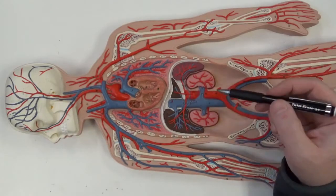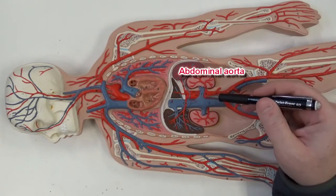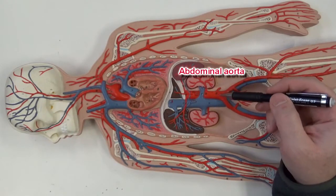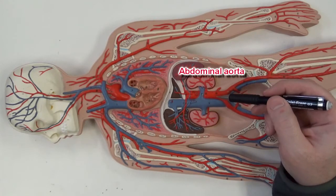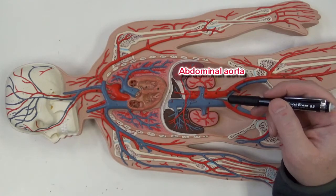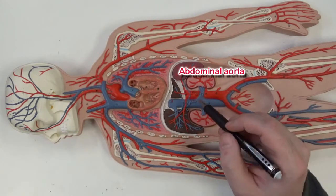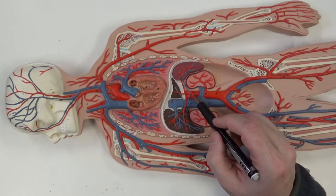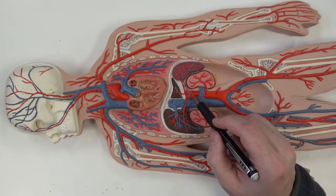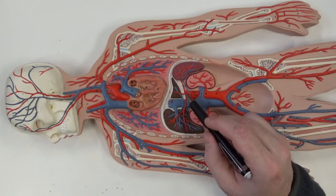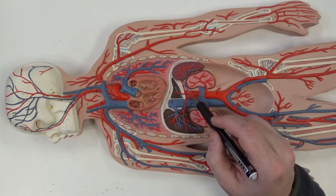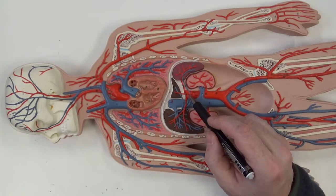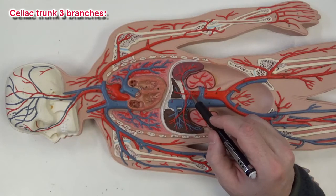Down below the diaphragm, we have the abdominal aorta. Remember, this is part of the descending aorta, but specifically the abdominal aorta. Here we can see a branch coming off the abdominal aorta which is going to have branches off of it, so we call this a trunk — and this is the celiac trunk.